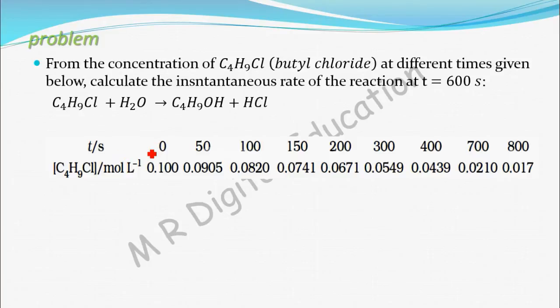At time t = 0, concentration of butyl chloride is 0.100 mol per liter. At time t = 50 seconds, concentration is 0.0905. Like this, given at time t = 100, 150, and so on.